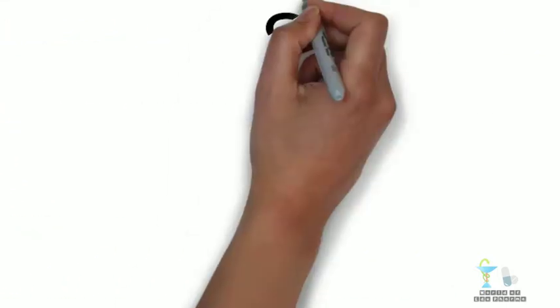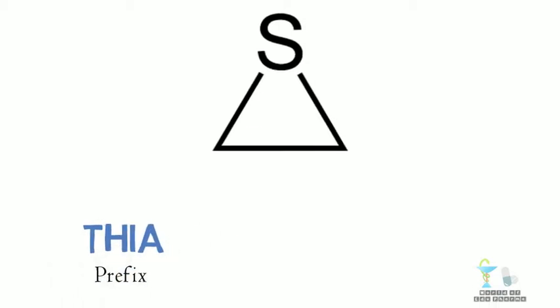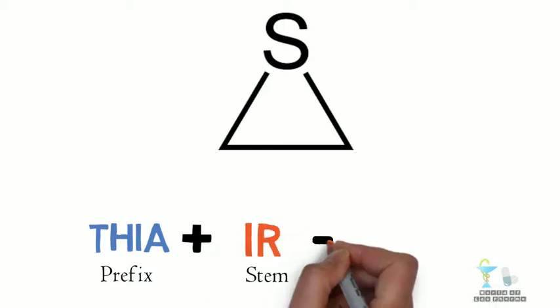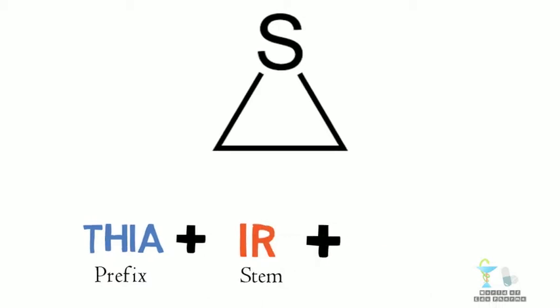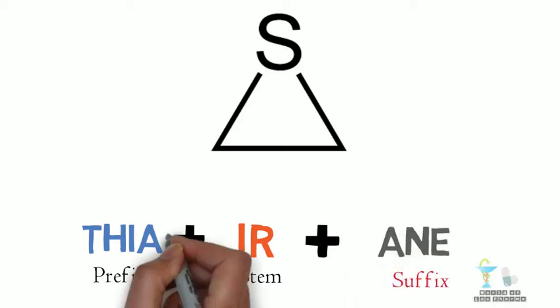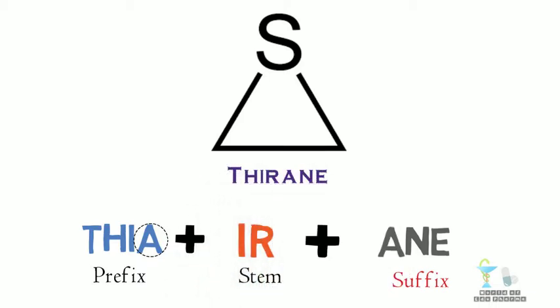Another example. Here for sulfur the suffix is THIA, three-membered ring, and being a saturated ring ANE is used. THIA plus IR plus ANE. Removing the last vowel sounding alphabet A from THIA, we get THIIRANE.